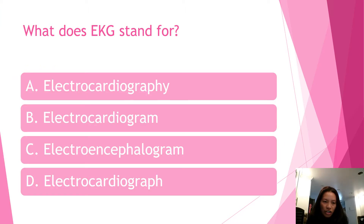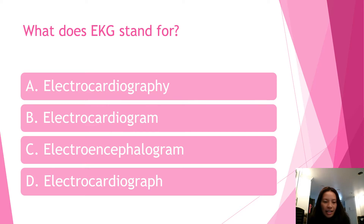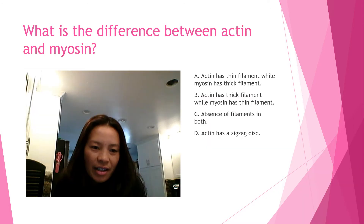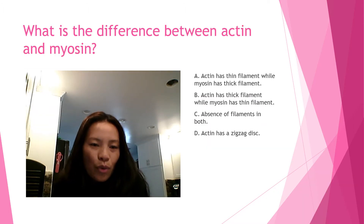Question one: what does EKG stand for? Is it A) electrocardiography, B) electrocardiogram, C) electroencephalogram, or D) electrocardiogram? The answer is electrocardiogram — letter B — also known as ECG.